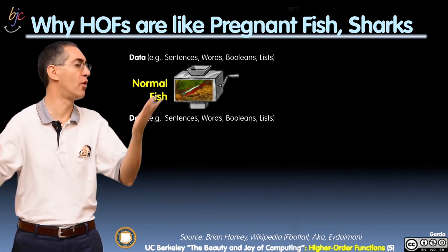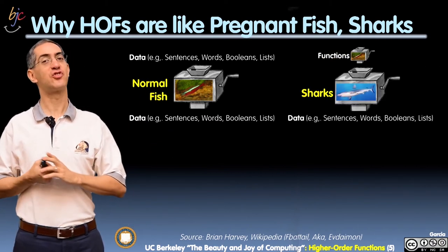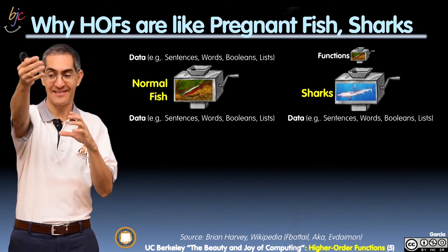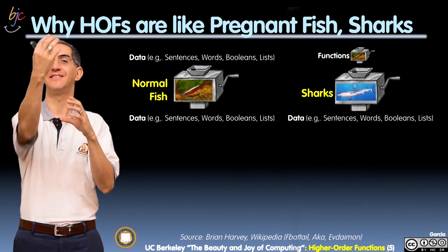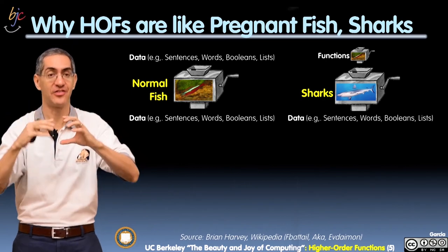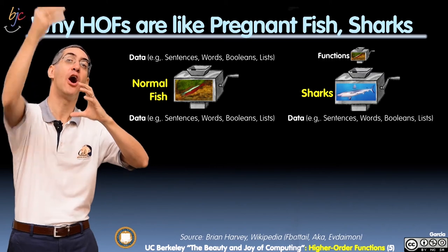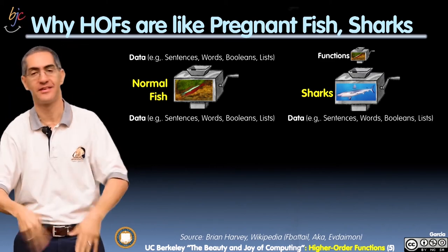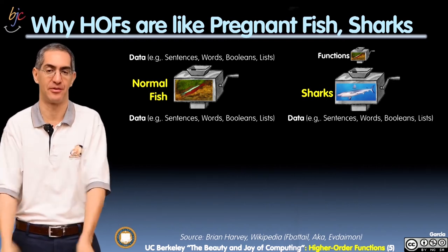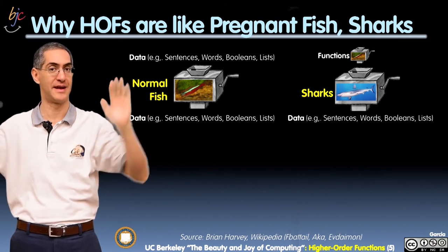Well, what's a shark? A shark is somebody like a higher-order function. It takes in, what is a shark taking as input? Other fish. Oh, see? So functions take in other functions. So fish are the functions, right? So sharks take in other functions as input, and the output is kind of, you know, like stuff, right? So it's more just data. It doesn't output another fish, it just outputs data. So that's a shark. So what you've seen so far is map, keep, and combine are like sharks. That's my analogy.